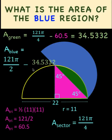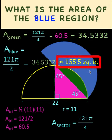Computing now for the value of this, we arrive at approximately 155.5 square units for the area of this blue shaded region. And this is now our final answer. So thank you very much, and we hope to see you again in our next video. Bye for now.